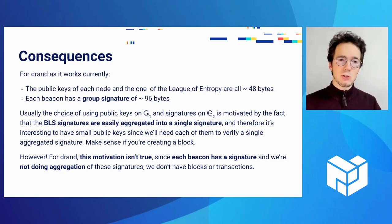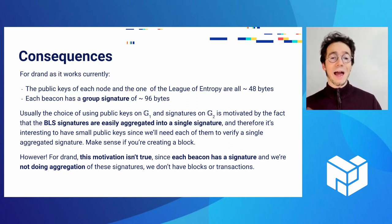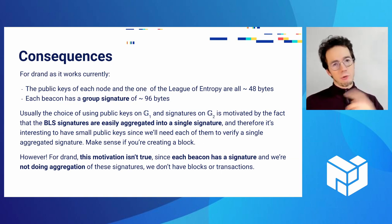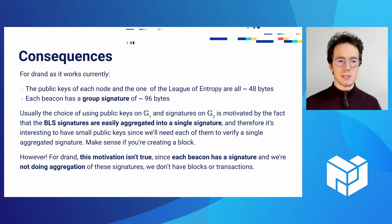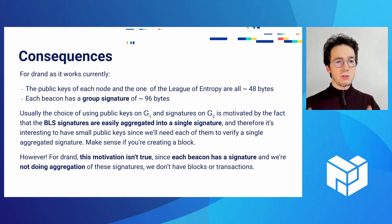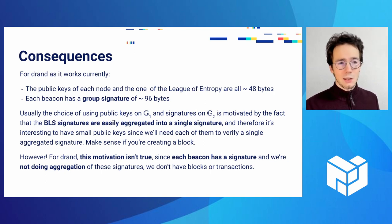People usually do it that way because they have many transactions signed by many public keys and want to include them in a block — you can aggregate all signatures into a single signature easily with BLS, but you don't want to aggregate the public keys because you need to know which address corresponds to which transaction. So people usually have short public keys and big signatures because they'll aggregate all the signatures into a single one. But that is not how drand works: each beacon has its own signature and we never aggregate signatures in drand. So for drand, it would make more sense to have one big public key and a lot of small signatures for each beacon. And this is exactly what we've done.